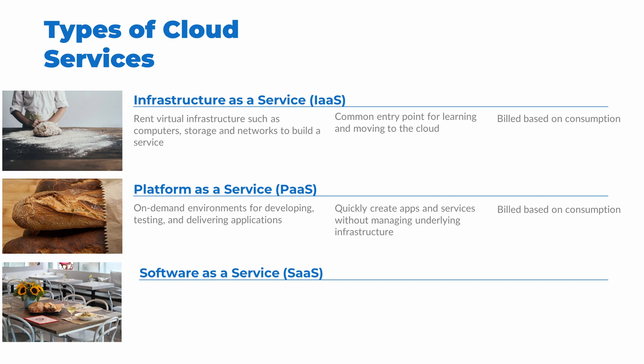The third option is software as a service, or SaaS. This is a way to deliver applications over the internet. A product like Microsoft Dynamics, for example, a customer relations management application. We don't have to build the application or host it — we just consume it, kind of like bread at a restaurant. One distinction with SaaS is that it's built based on a subscription, typically licensed per user, just like a restaurant where each person pays for what they order. This is different from the other solutions that bill by the resources used.